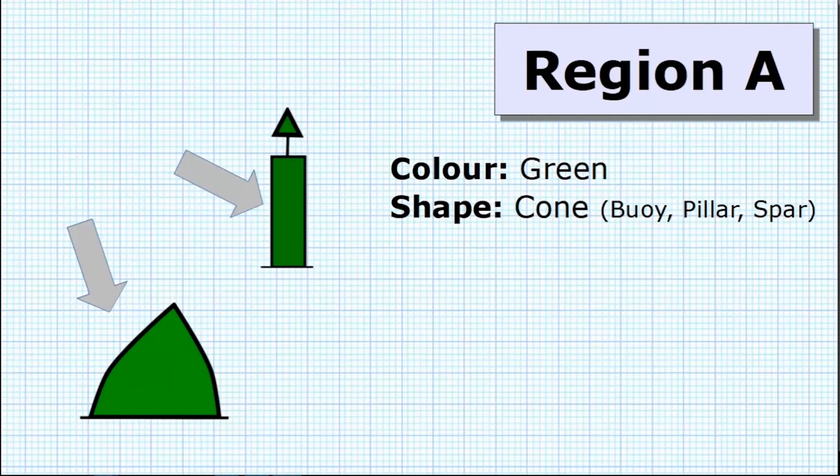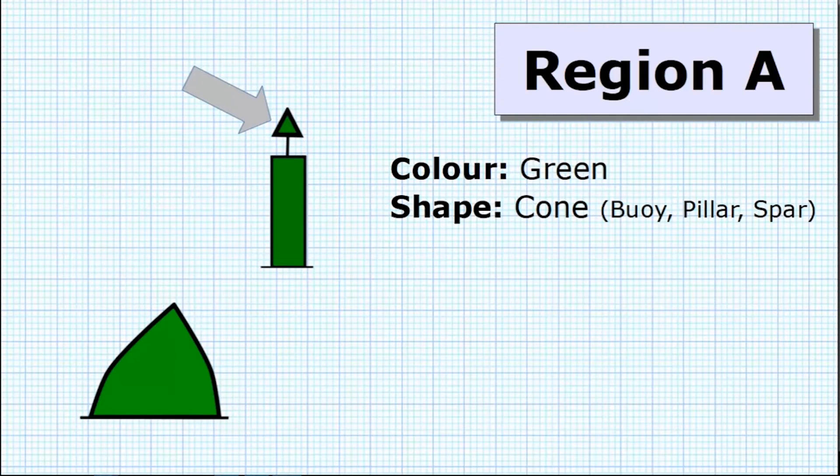In this case, the bottom diagram represents a buoy and the one at the top is a pillar. In the case of a pillar, it's got to have the top mark and the top mark is going to be a green cone.